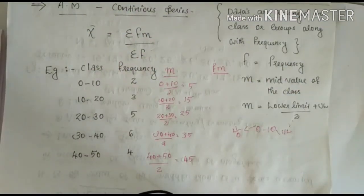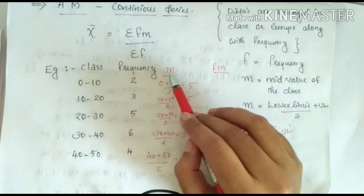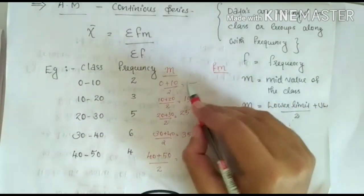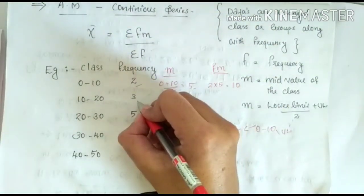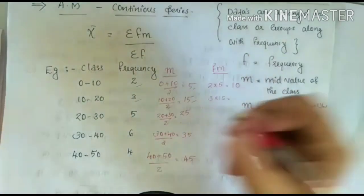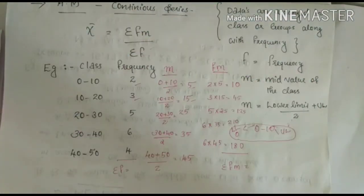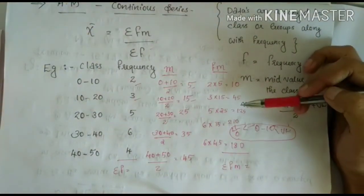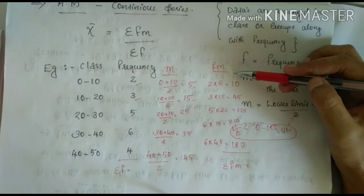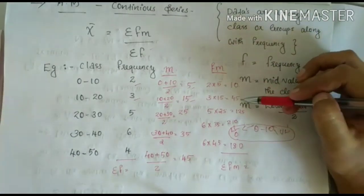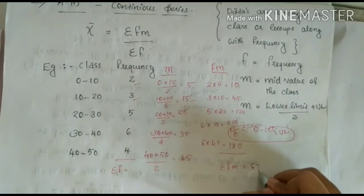After finding the mid value for all classes, you have to calculate FM — frequency multiplied by mid value. For example: 2 × 5 = 10, 3 × 15 = 45, 5 × 25 = 125, and so on. After finding the FM values for all classes, find sigma FM — the total of the FM column. The FM values are 10, 45, 125, 210 and 190, and sigma FM = 570.